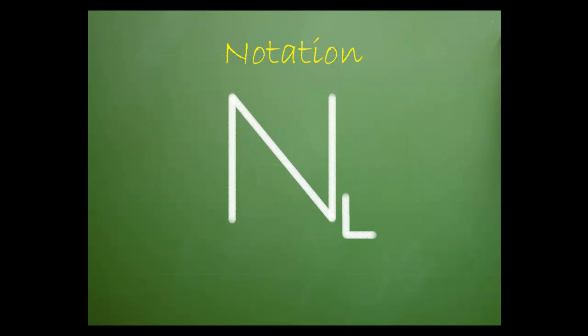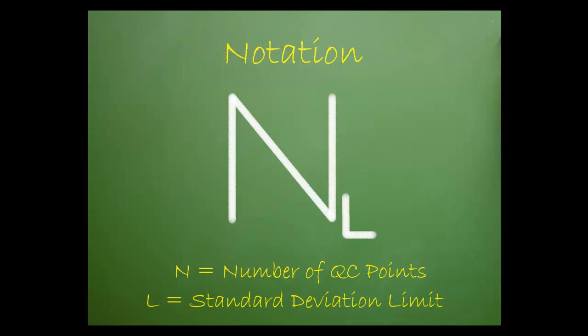Next, it's important to understand that Westgard developed a system of notation for the rules. The first pattern works like this: N equals the number of QC points and L equals the standard deviation limit.